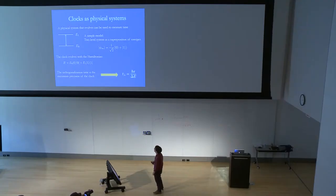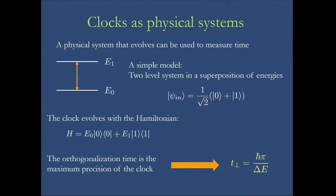To begin to answer this question, let's consider what a clock is. A clock is any physical system that changes, any physical system which is in a non-stationary state. The simplest example would be this kind of a two-level system in this state, zero plus one, evolving with this Hamiltonian that is here.